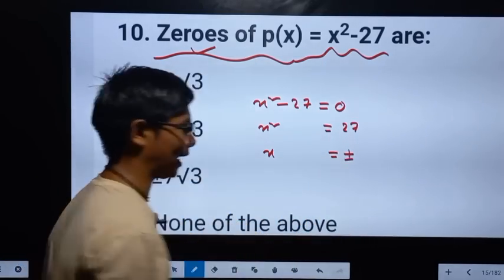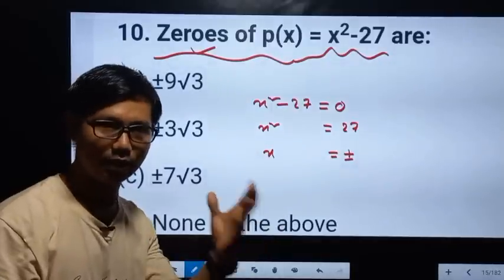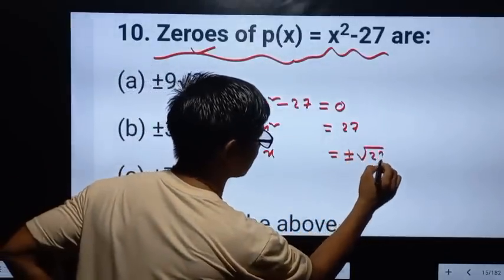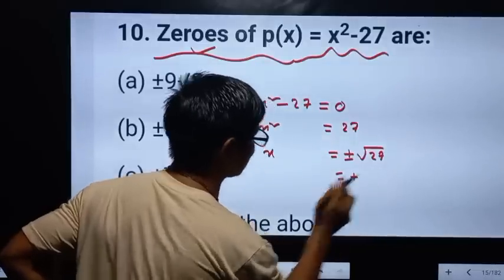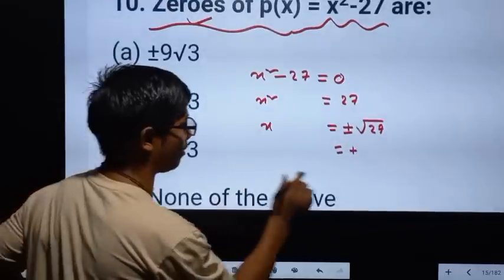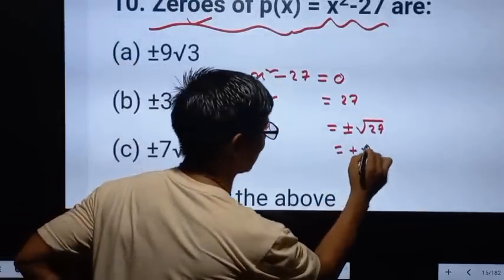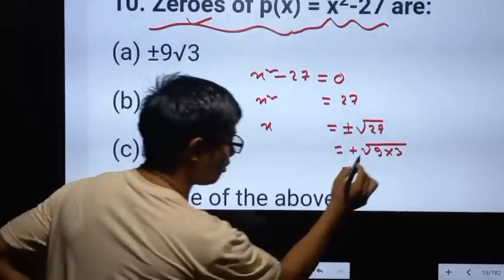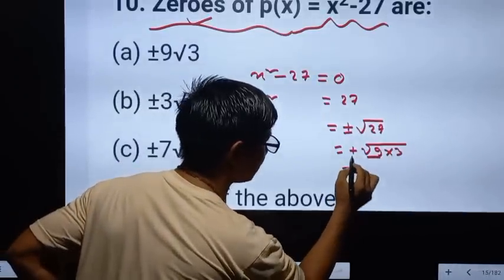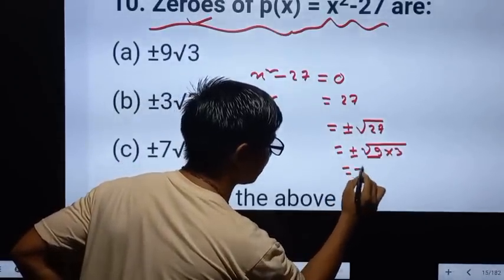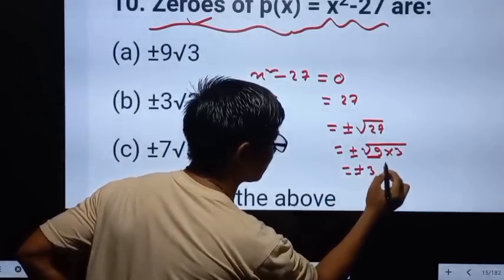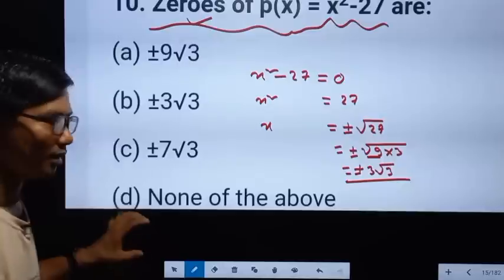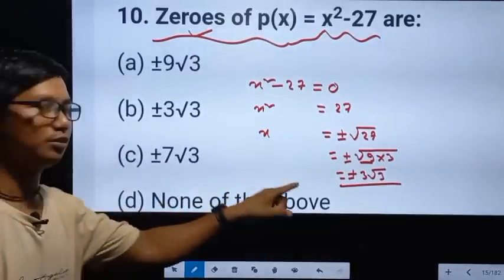I have a plus minus x. How many times is the square root of 27? 27 square root — we will see that 9 of this is at the bottom. 9 of this is plus minus 3. So the answer is plus minus 3 root 3.